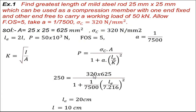The next problem is also based on Rankine's theory. Find the greatest length of a mild steel rod 25 mm × 25 mm which can be used as a compression member with one end fixed and the other end free, to carry a working load of 50 kN. Factor of safety = 5, Rankine's constant a = 1 : 7500, and crushing stress sigma_c = 320 N/mm².